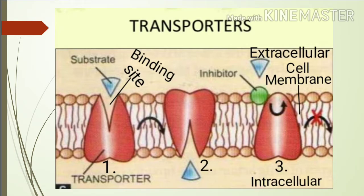यहाँ पर cell membrane present है. Cell के बाहर वाले हिस्से को extracellular region कहते हैं और cell के अंदर वाले region को intracellular region कहते हैं. यहाँ पर substrate present है जिसे extracellular से intracellular में आना है, और वो आएगा transporter की help से. First state में transporter का binding site extracellular की तरफ है और substrate extracellular में present है, तो substrate transporter के binding site पे bind होगा. फिर transporter अपने shape को change करेगा, clockwise move करेगा, जिसकी वजह से transporter का binding site और उस पर bind substrate intracellular की तरफ हो जाएगा, और फिर transporter substrate को intracellular में drop कर देगा.